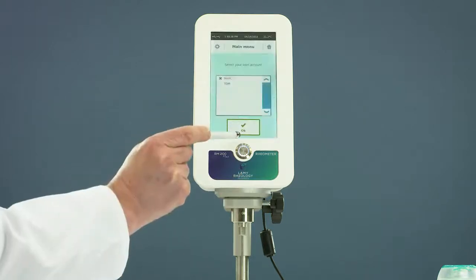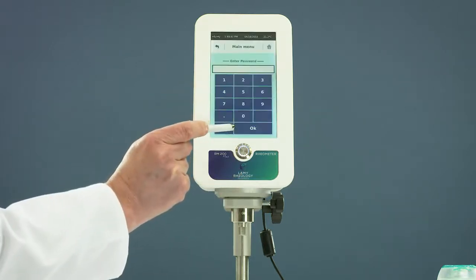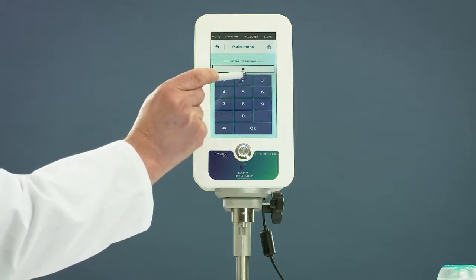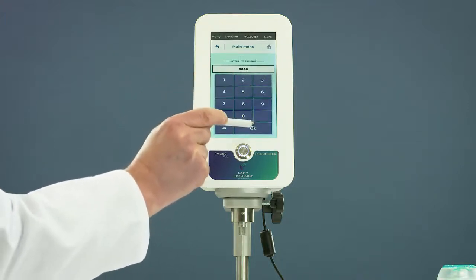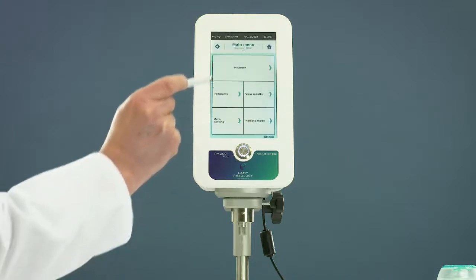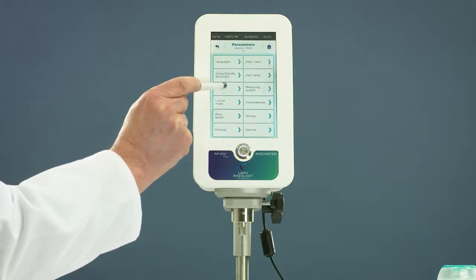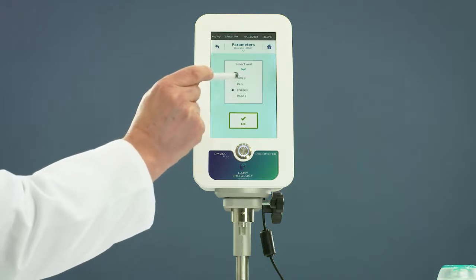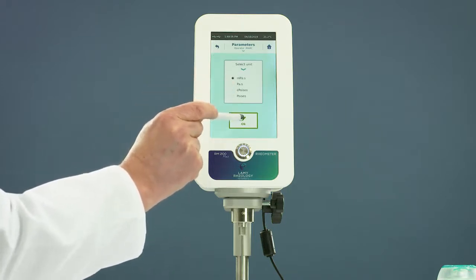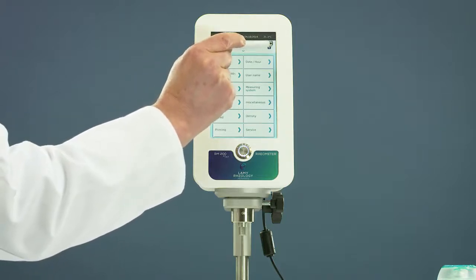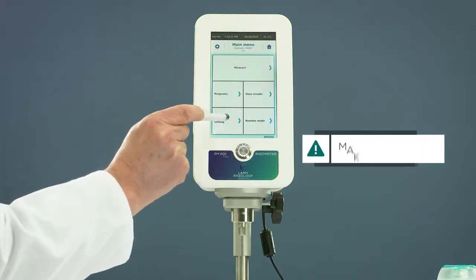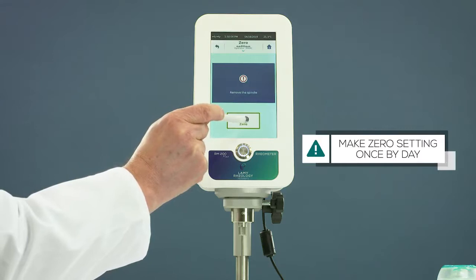When user mode is enabled, choose your account and enter your pin code. Choose a unit for the viscosity. Zero the device. You should make it at least once per day.